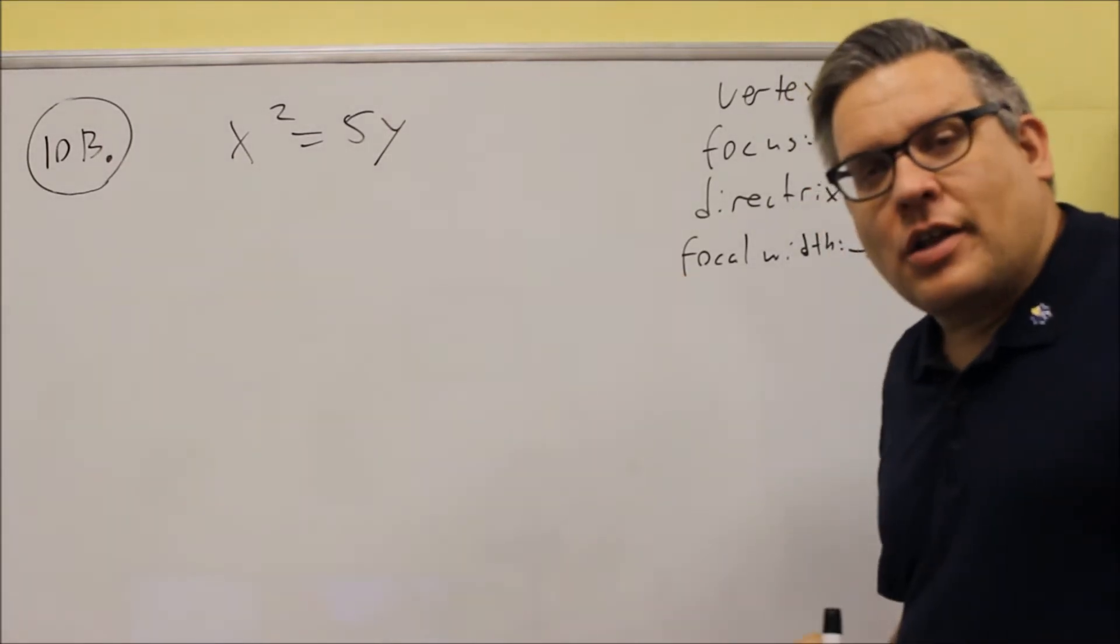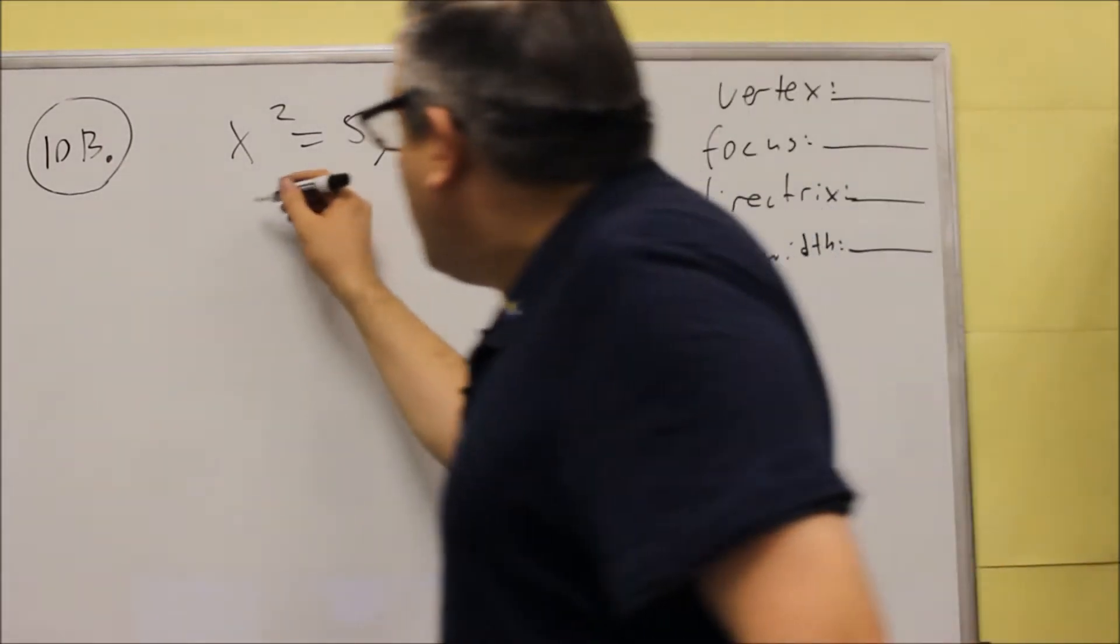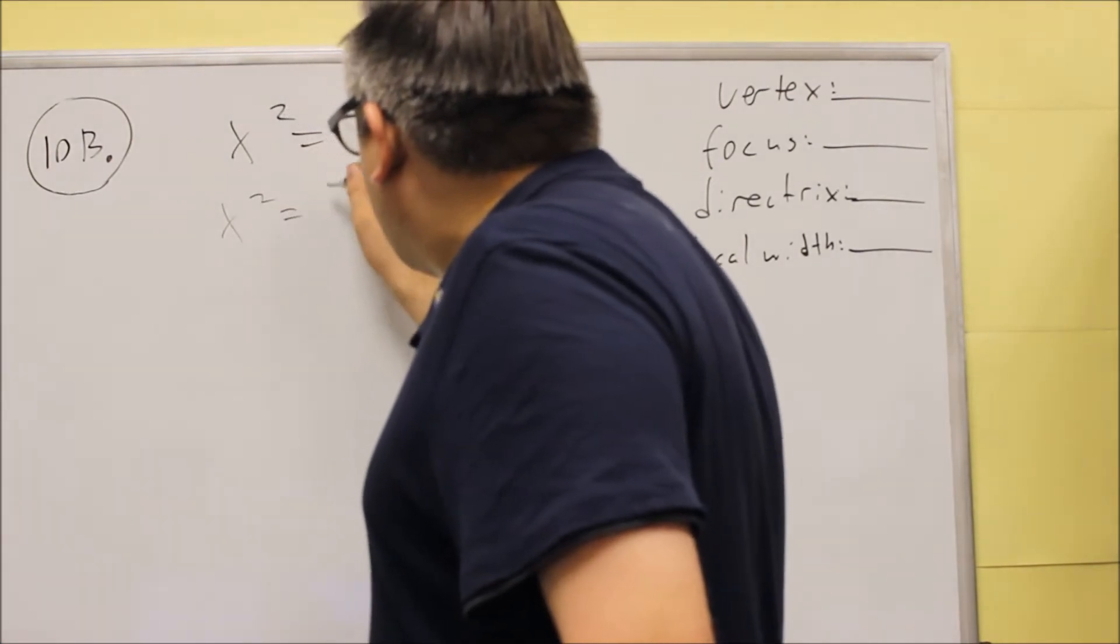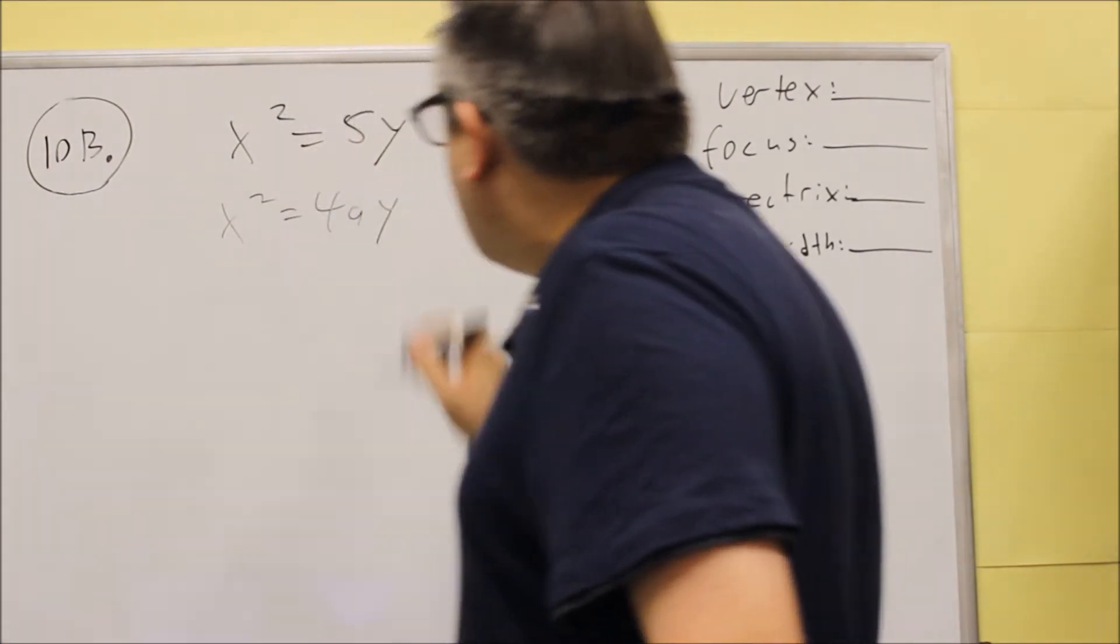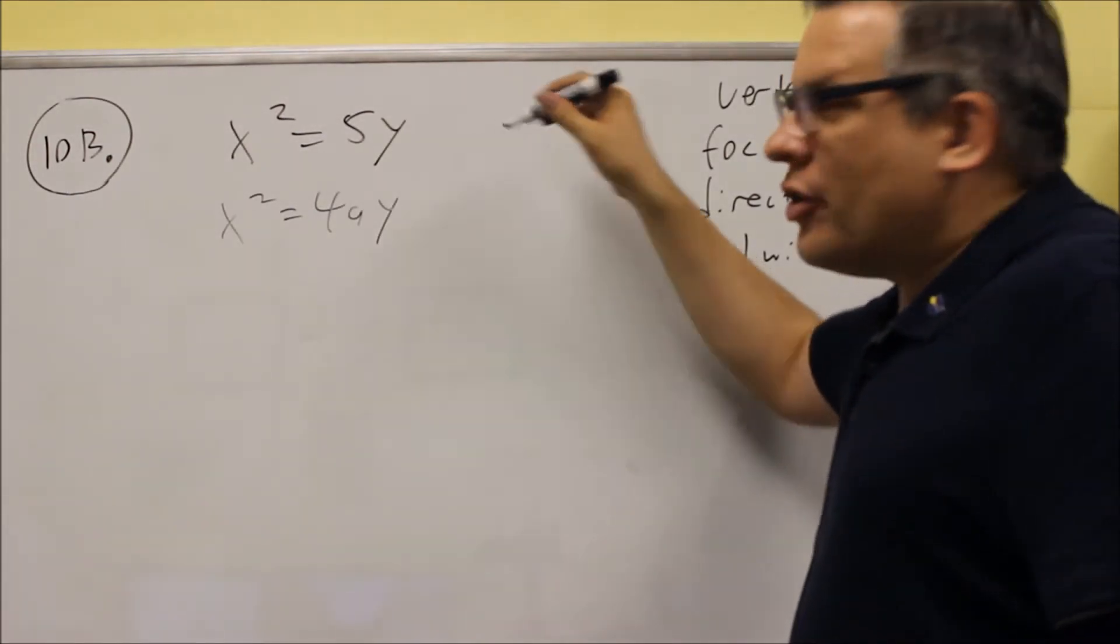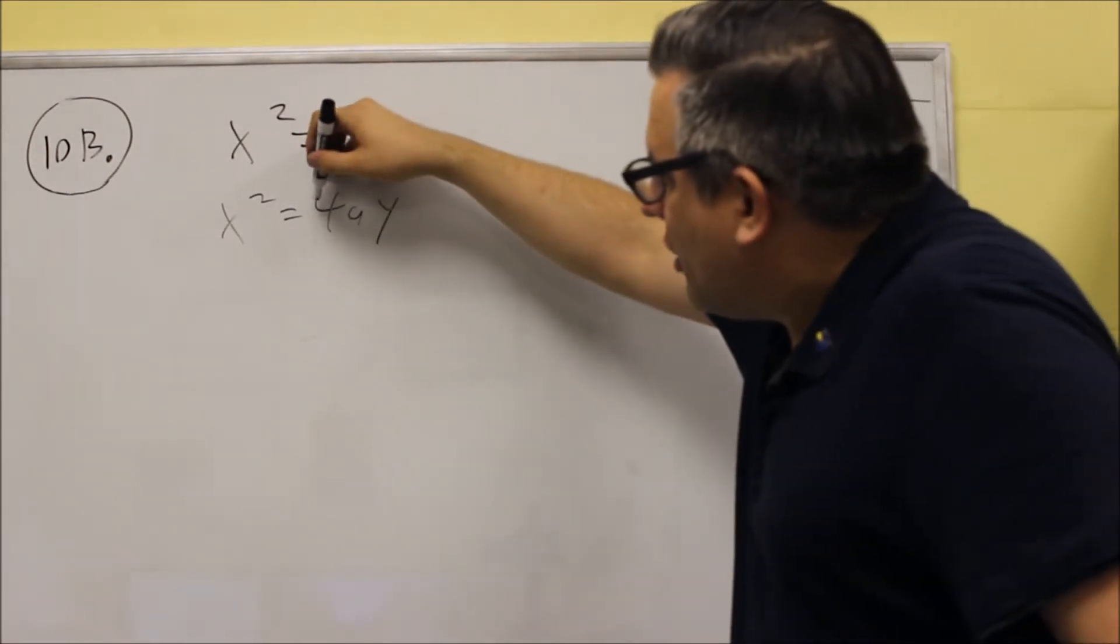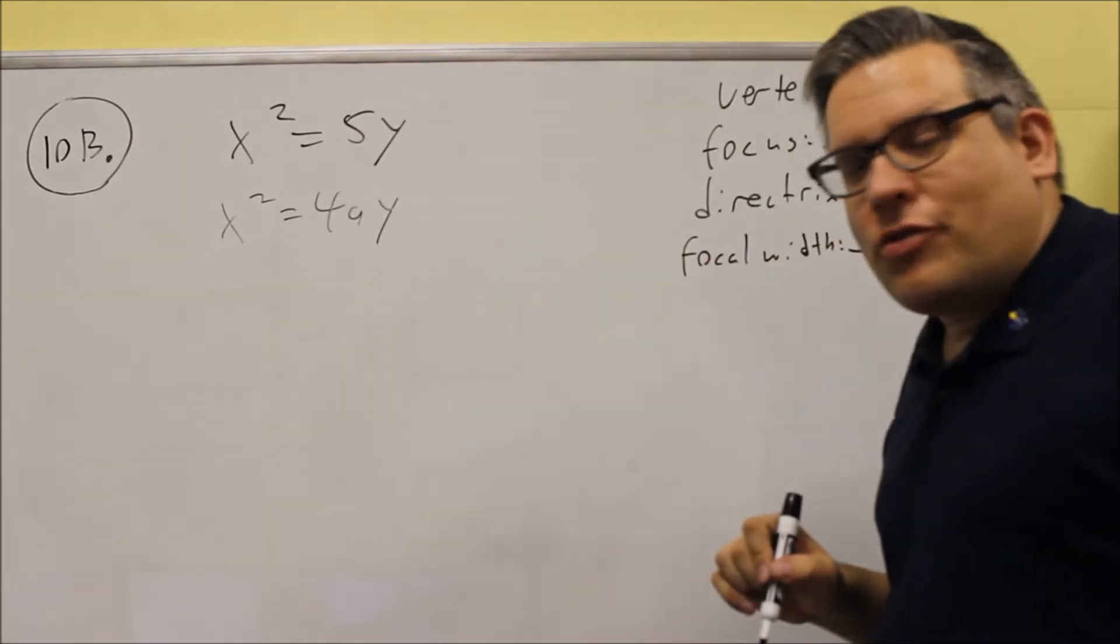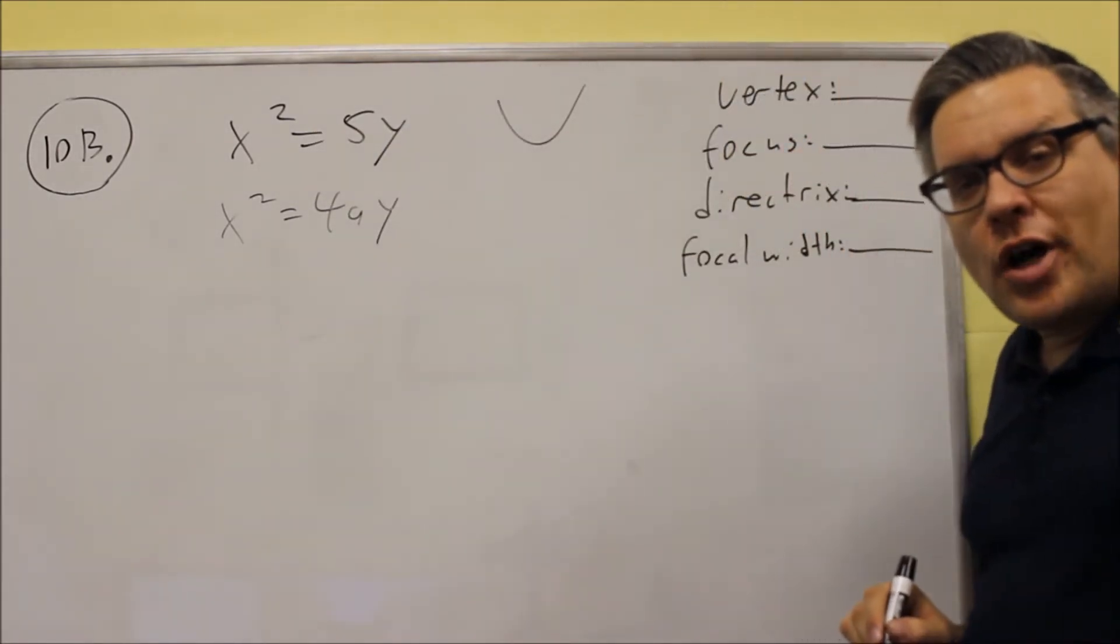Now, based on this, the model that goes with that is x² = 4ay. If the x² comes first, that means it either opens up or down, and because there is a positive in front of the 4 there, that means it's going to be a parabola opening up.